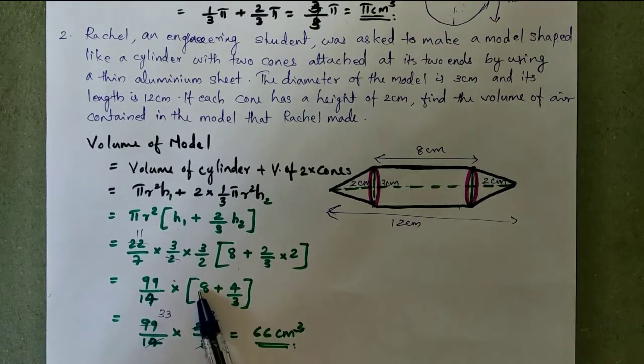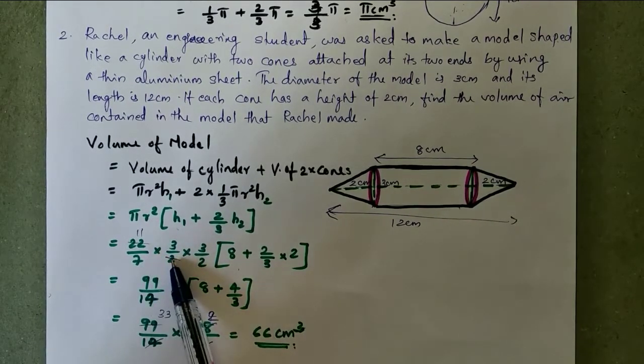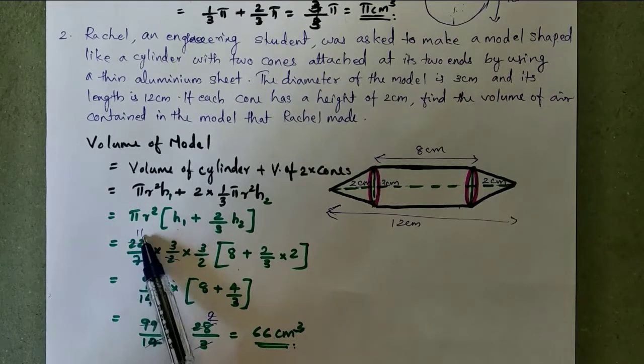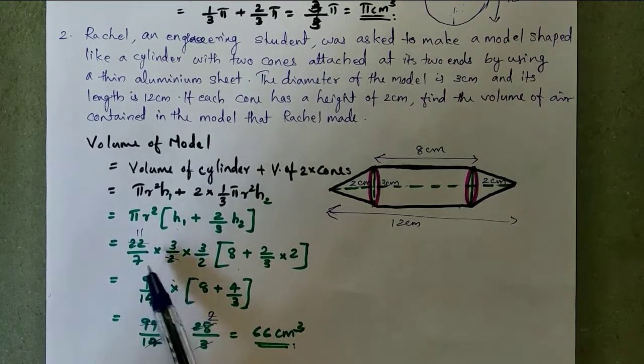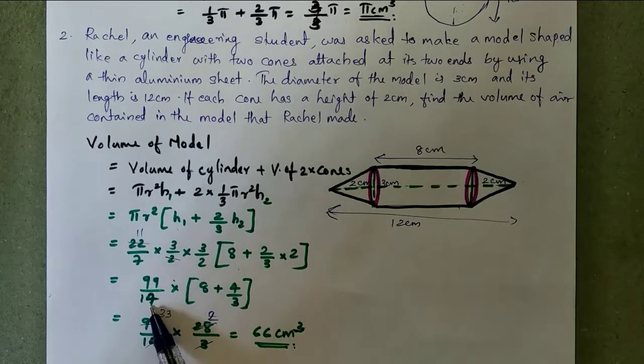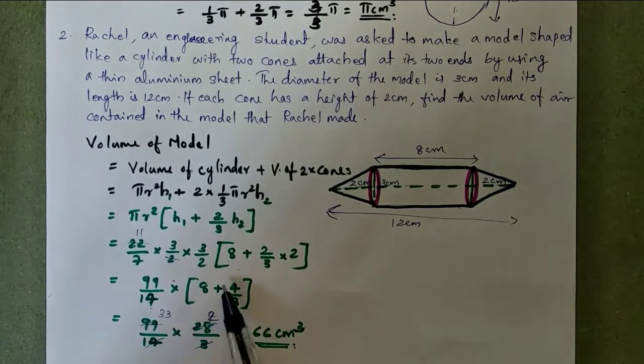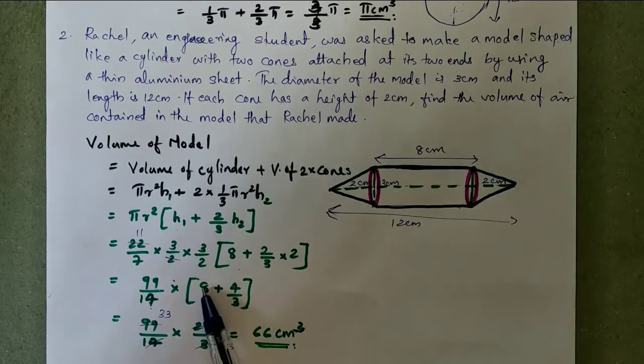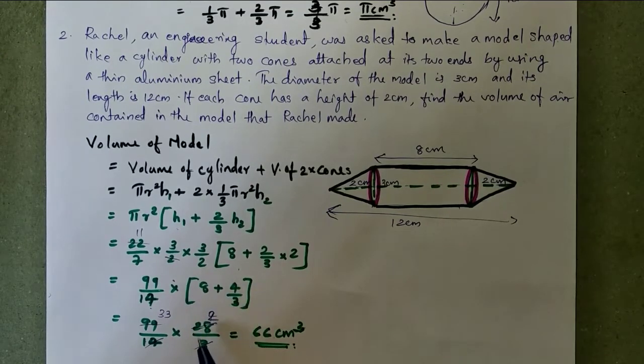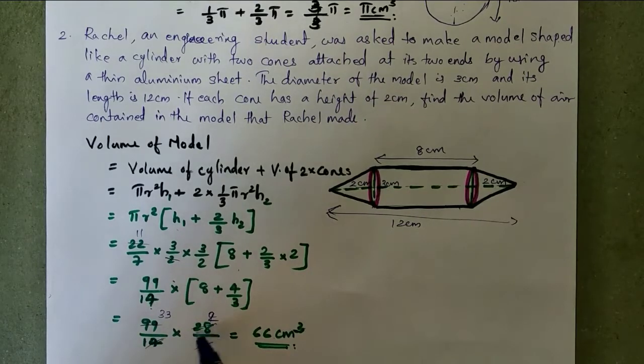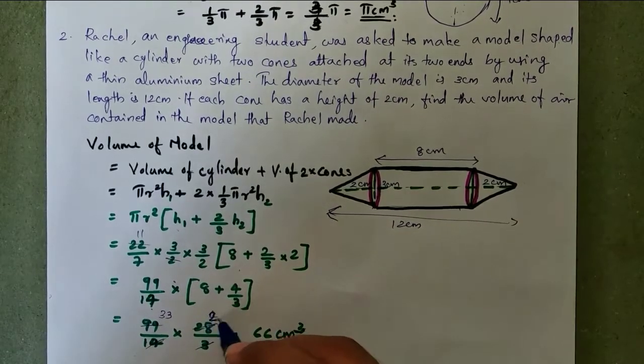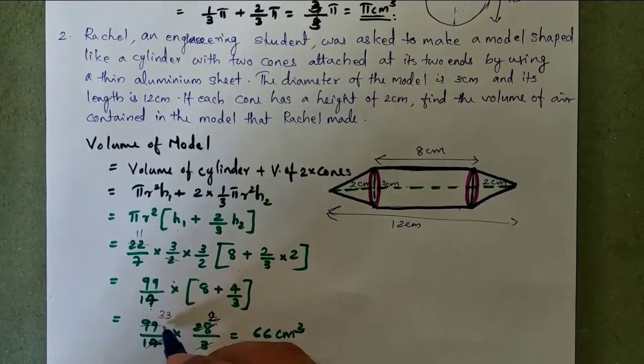2 into 2 is 4, 4/3 plus 4/3 plus 8. Here cut 2 and 12, 11, 11 into 3 into 3, 99, 2 into 7, 14. Okay, 99 divided by 14 into cross multiply, 3 into 8, 24, 24 plus 4, 28 by 3.